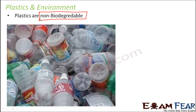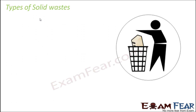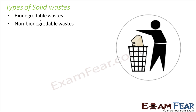What we want is that plastic should get broken down and get into the environment — it should not remain as waste. So here we talk about biodegradable and non-biodegradable. Any type of solid waste we throw can be categorized into two types: one is biodegradable and the other is non-biodegradable.